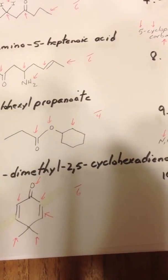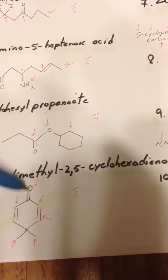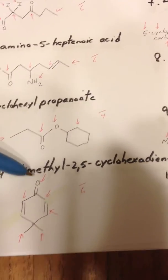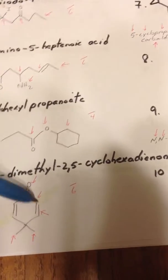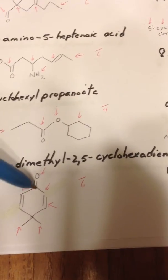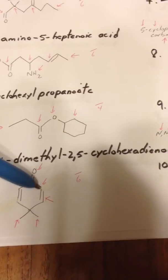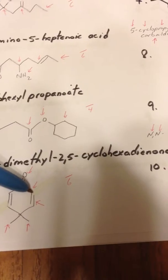4,4-dimethyl-2,5-cyclohexadienone. Here's the ketone group, which is the first position, and then we number around clockwise. We actually can go counterclockwise and get the same name, but anyway.